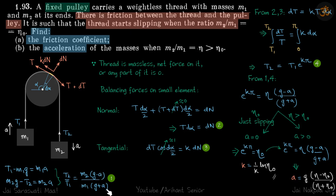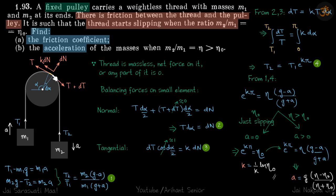In the first case, when the thread just starts slipping, acceleration is obviously zero. Before that, let's see what's happening on the rope itself. The difference between t1 and t2 is caused by friction. The net force on a massless object is always zero, so t2 minus t1 must equal the frictional force on the whole thread. Our approach is to take a small element and equate the net forces to zero, since the thread is massless.